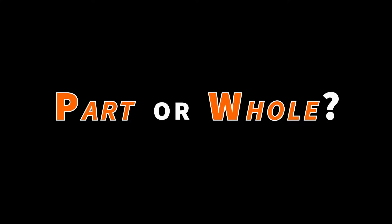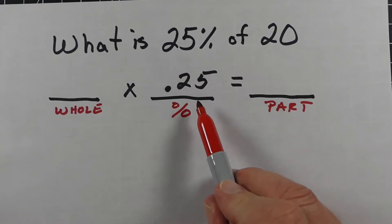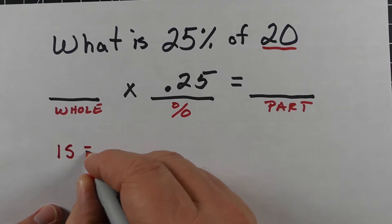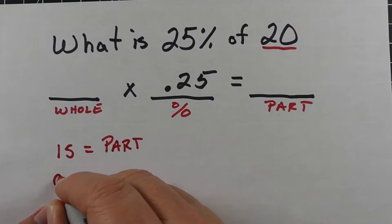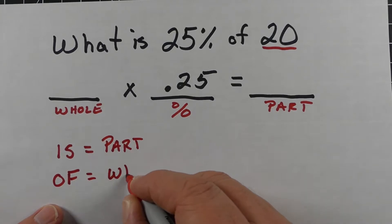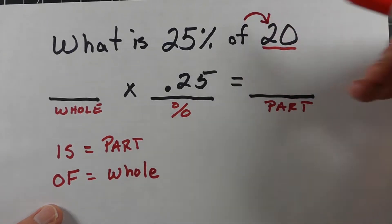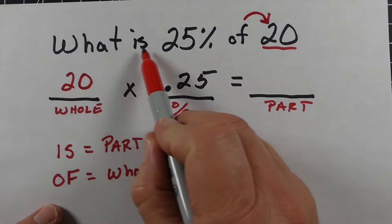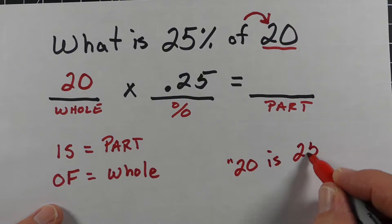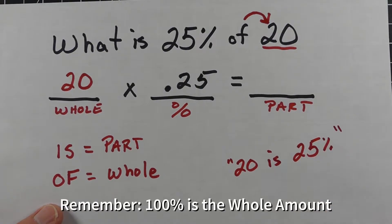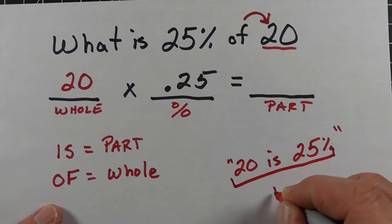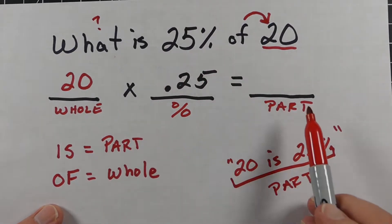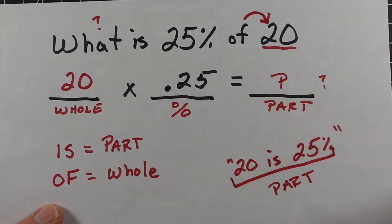A common question is: is a number the whole or the part? A couple of clues — if you see a number with the word 'is,' it's usually the part. If you see a number with the word 'of,' it's usually the whole amount. So 'of 20' signals the whole amount. If the problem had said '20 is 25%,' that would mean 20 is the part, and we'd be solving for the whole. But here we're asked 'what is 25%,' so the part is unknown and we use a variable.